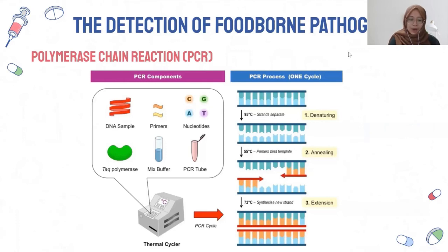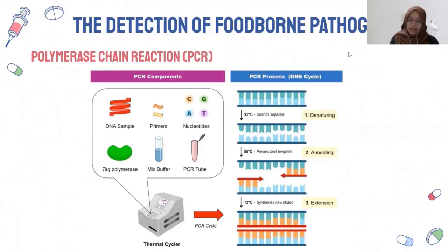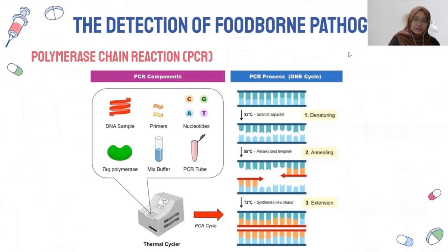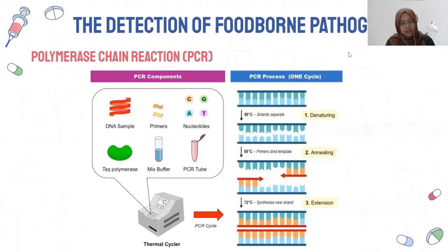For annealing, the temperature is reduced to 55°C. Due to the lower temperature, bonding between the primers and the template occurs, and the primer helps the polymerase find its attachment site. For extension, it occurs at 72°C — the optimum temperature for the polymerase. The polymerase starts working, synthesizing from 5 prime to 3 prime, joining nucleotides at complementary positions to the template DNA. As a result, an identical copy of the DNA is produced.